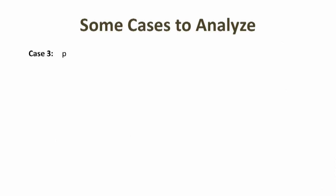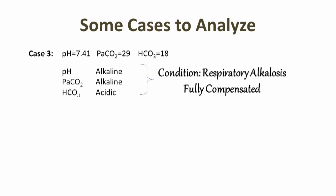Case number three: pH is 7.41, PaCO2 29, HCO3 18. pH is alkaline here, PaCO2 is alkaline, HCO3 is acidic. So this condition is diagnosed as respiratory alkalosis, fully compensated. Okay, now for the next two cases, pause the video and work it out for yourself.